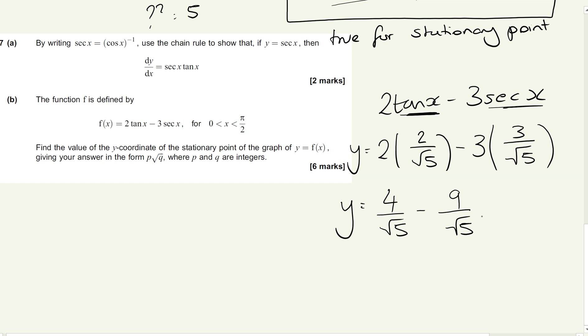we're going to have 4 over root 5 minus 9 over root 5. Now, if you were just to put that into your calculator, you would find out the correct answer. Or if we work out the fact we've got our common denominator, we've got minus 5 over root 5. And again, our calculator then just gives us that as minus root 5. And so P and Q, well, P is minus 1 and Q is 5. And there we have our six marks for that question.